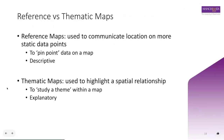GIS produces two broad types of maps: reference maps and thematic maps. Reference maps are used to communicate location on more static data points — they pinpoint data onto a map and are inevitably very descriptive. Thematic maps, on the other hand, are used to highlight a spatial relationship and study a theme within a map. This is where mapping becomes more explanatory.